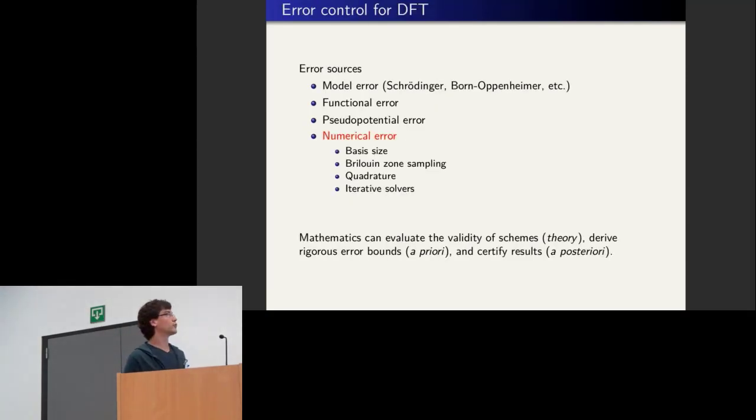So the main error control for DFT, of course you know this even better than I do. There's of course the model error, which is that you model the system in a certain way with the Schrodinger equation and so on. Then you choose a particular DFT functional. Then you pick a pseudopotential, that's even one more source.